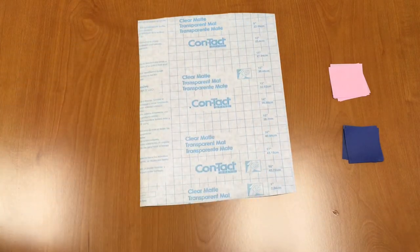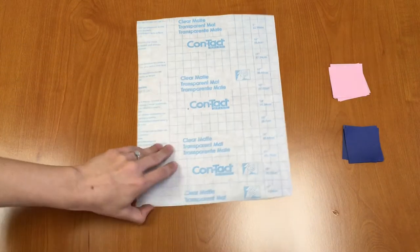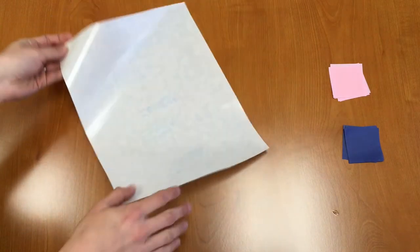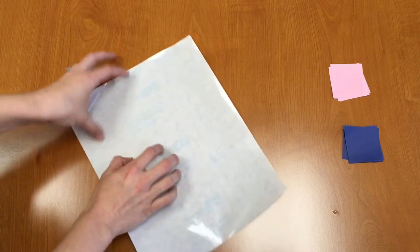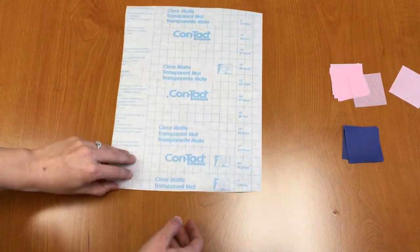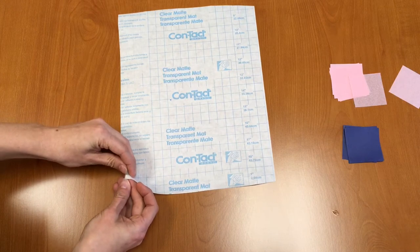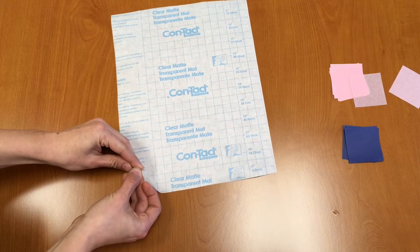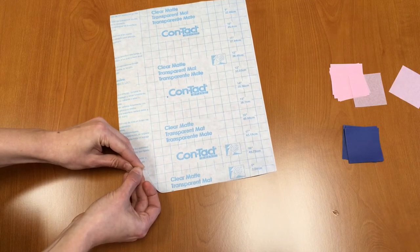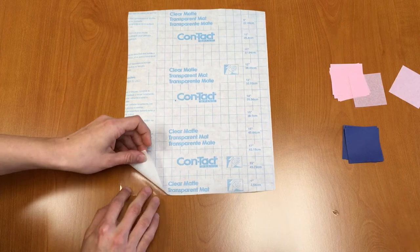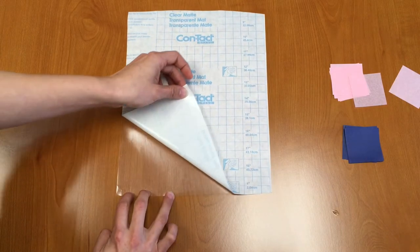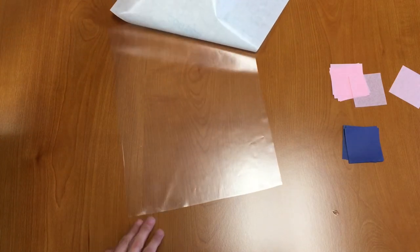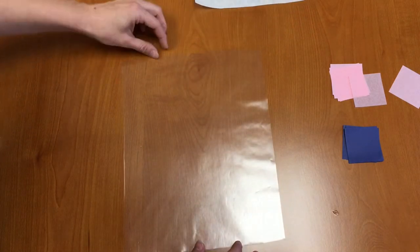We're going to start with just one piece of contact paper and our squares of tissue paper as well. So what we want to do is with the shiny side, the shiny plastic side facing down, we want to start to peel off the back of our contact paper. So it might take me just a second here to find where it peels. There we go. And then very carefully and very slowly just peel off the back of that contact paper so that the sticky side is face up. There we go.